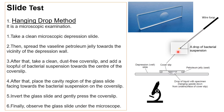Place the cavity region of the glass slide facing the bacterial suspension on the cover slip. Invert your glass slide and apply it on the cover slip such that the depression or cavity of the slide is over the bacterial suspension drop. Then invert your glass slide again and gently press the cover slip so that it will not move while observing under the microscope. To observe motility, first adjust the drop edge at 10x and then observe under 40x.